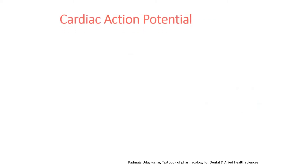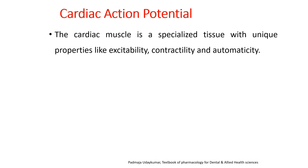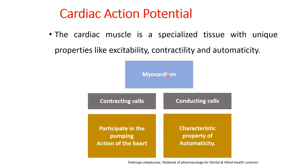Now the next part is the cardiac action potential. The cardiac muscle is a specialized tissue with unique properties like excitability, contractility, and automaticity. The myocardium consists of two different types of cells: the contracting cell, which participates in the pumping action of the heart, and the conducting cell, which has the characteristic property of automaticity.